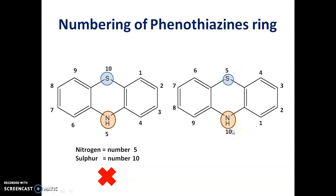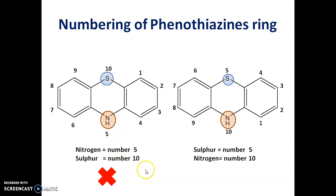Let us discuss which numbering is correct and why. In the first case, sulfur gets number 10 and nitrogen gets number 5 — this is wrong. In the second case, sulfur gets number 5 and nitrogen gets number 10 — this is correct. Because nitrogen has less priority compared to sulfur, sulfur will get number 5 and nitrogen will get number 10. That is why this numbering system is correct.